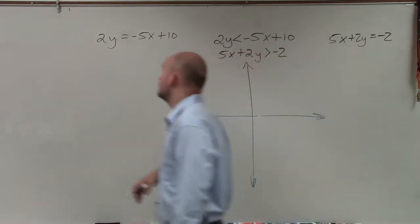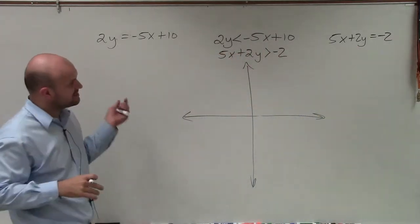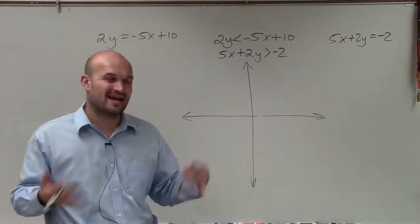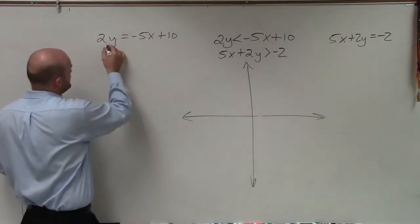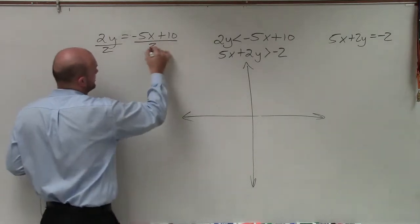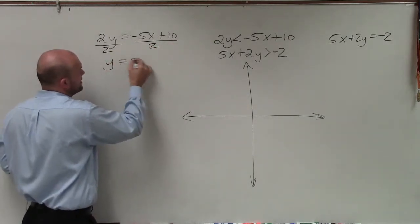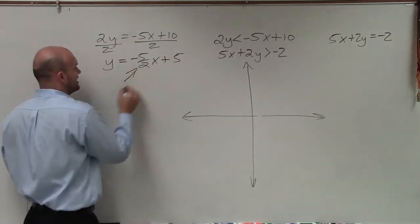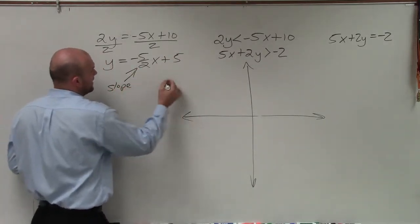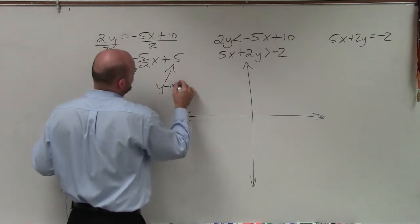Negative 2. OK. So in here, the easiest way for me to go ahead and solve this would be to write actually both these in slope-intercept form and graph using the slope-intercept method. So to do that, I'm going to divide by 2 on both sides. And I have y equals a negative 5 halves x plus 5. Where negative 5 halves is my slope and 5 is my y-intercept.